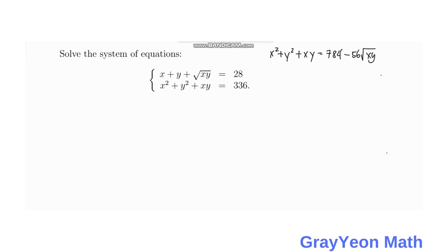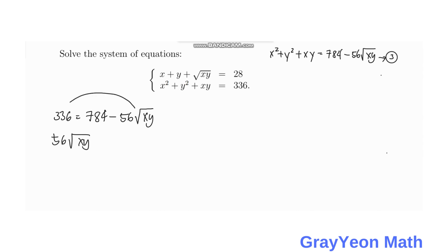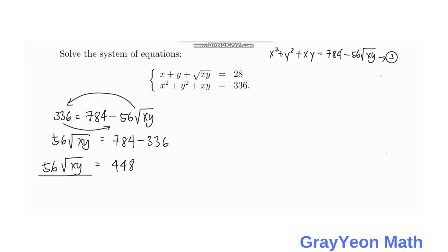We simply use Equation 2. We replace x squared plus y squared plus xy with 336 in Equation 3. So 336 is equal to 784 minus 56 times the square root of xy. Rearranging, 56 times the square root of xy equals 784 minus 336, which is equal to 448.